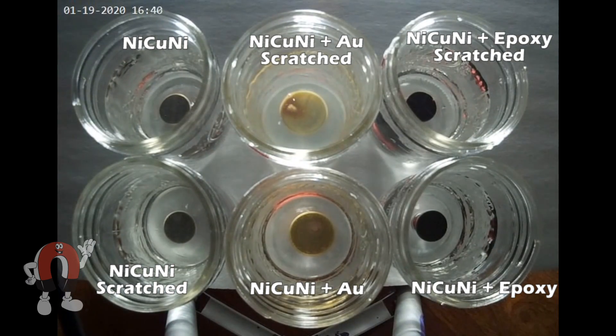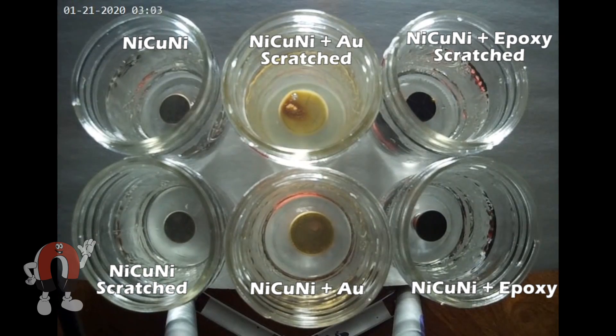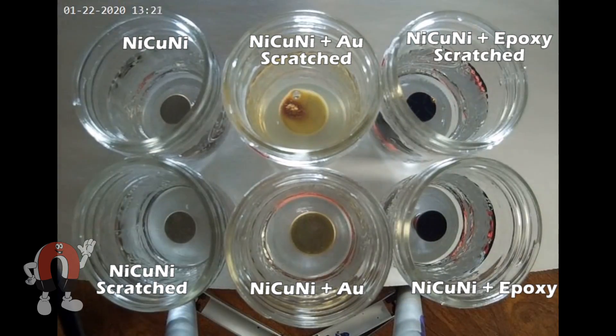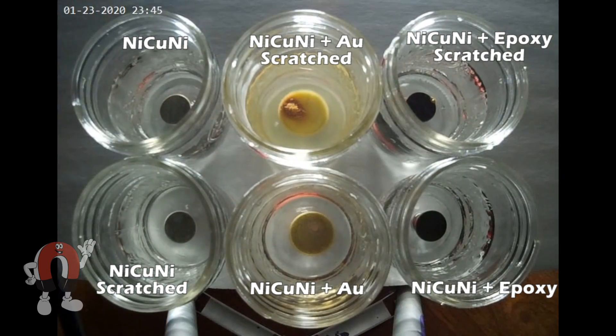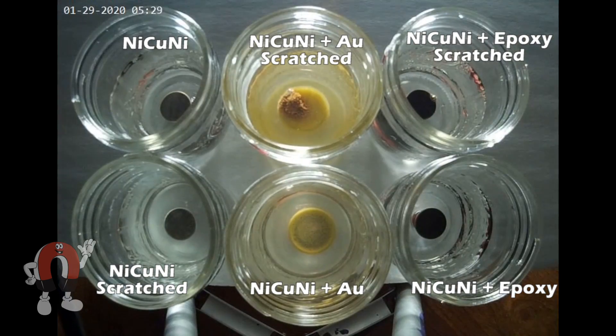The scratch gold plated magnet is the first to show signs of rust within about a week. Surprisingly, the standard nickel plated magnet lasts quite a long time before showing rust.